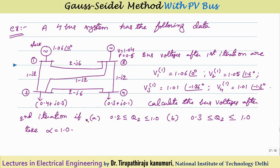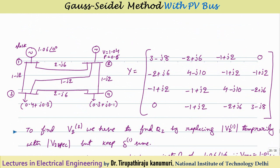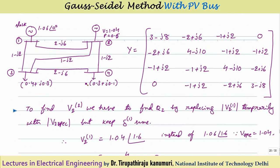The problem asks to calculate bus voltages after the second iteration under two conditions: Case 1 - Q limits for the PV bus are between 0.2 and 1.0; Case 2 - Q limits are between 0.3 and 1.0. The acceleration factor α = 1.0. The first step in any numerical is formation of the Y bus.